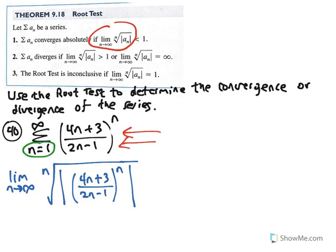For all n, the terms of our series will be positive, so the absolute value sign is redundant and we can get rid of it. Now we have a quantity raised to the nth power and we're taking the nth root — those are inverse operations. You can write the nth root as raising to the 1 over n power, and with the power of a power, you multiply exponents. The nth power is undone by the nth root, giving a significant simplification.